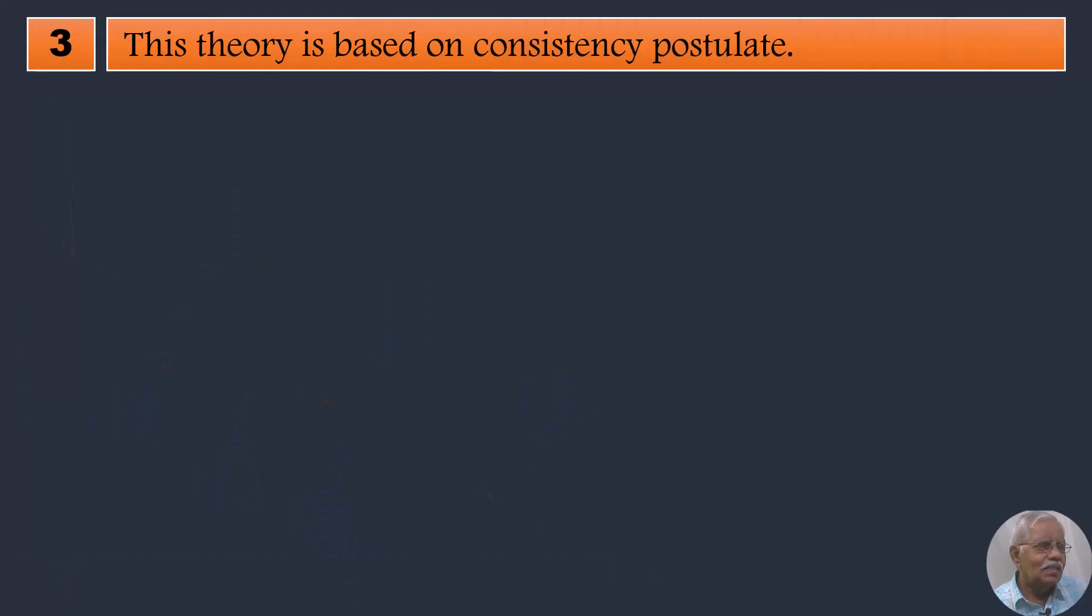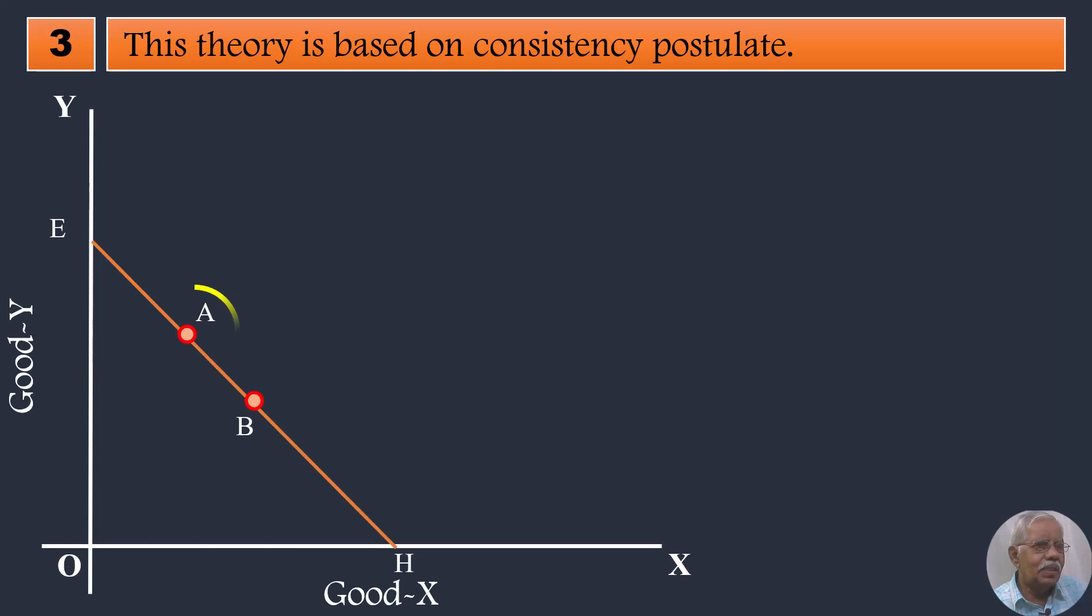3. This theory is based on consistency postulate. Accordingly, the consumer behaves consistently. There is no inconsistency in making his choice. What do we mean by this? If combinations A and B are available in one instance, consumer chooses combination A. It means he rejects combination B in favour of A.